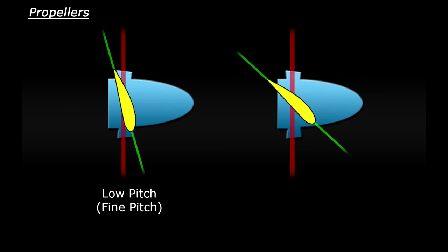When the blade is angled more steeply, this is having a high propeller pitch or a coarse pitch. This is generally used at higher air speeds when the aircraft is cruising along for example.